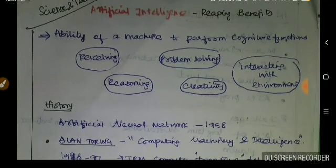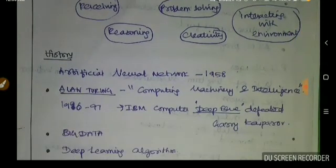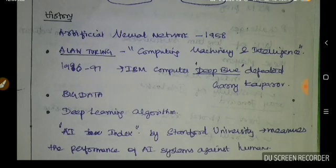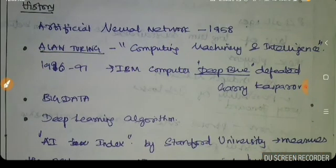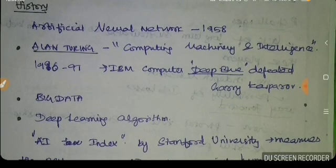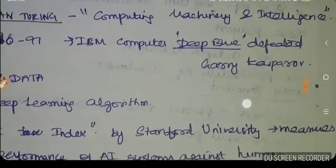In terms of history, in 1958 the Artificial Neural Network was introduced. Alan Turing released his paper 'Computing, Machinery and Intelligence.' Then in 1996–1997, IBM's Deep Blue computer defeated chess champion Garry Kasparov — a significant milestone.